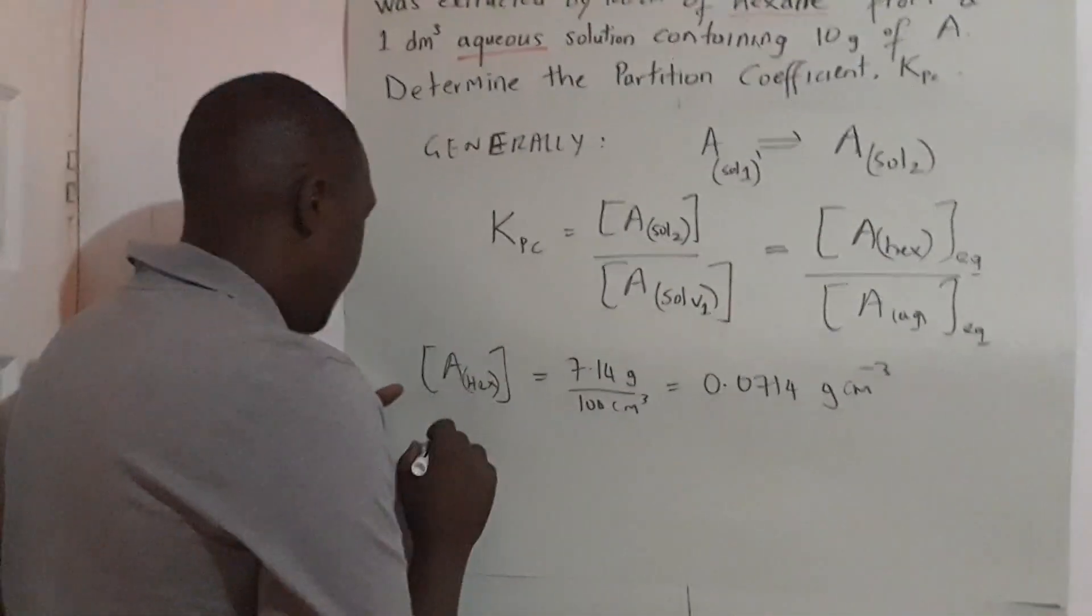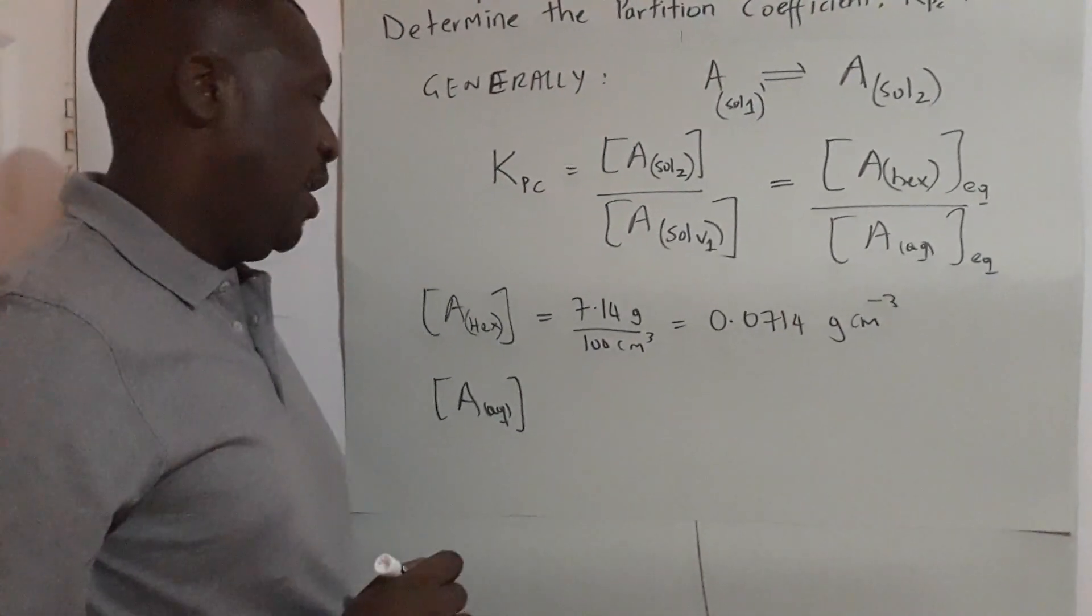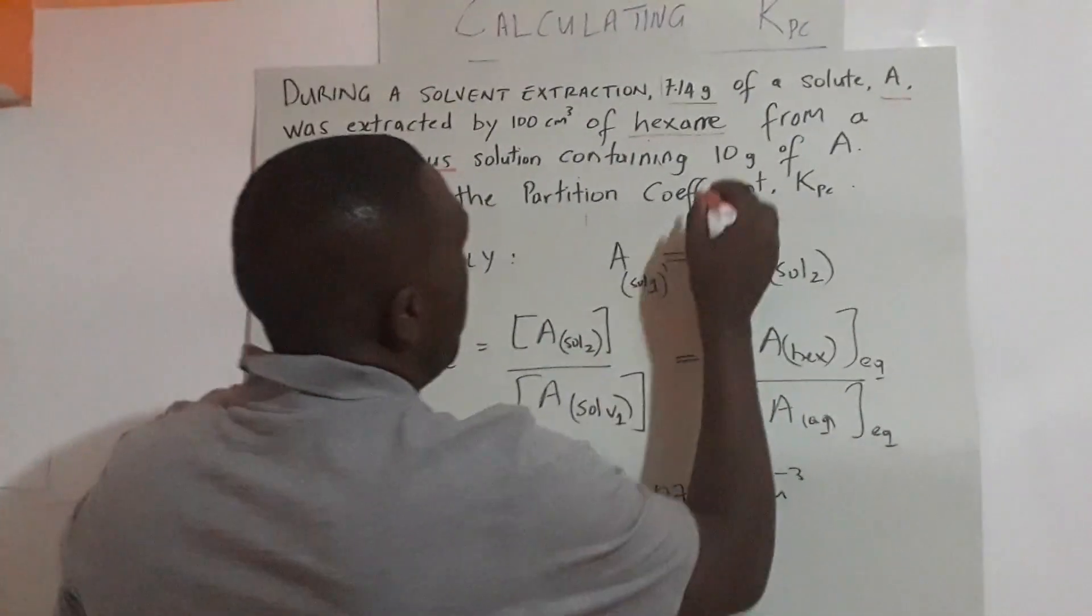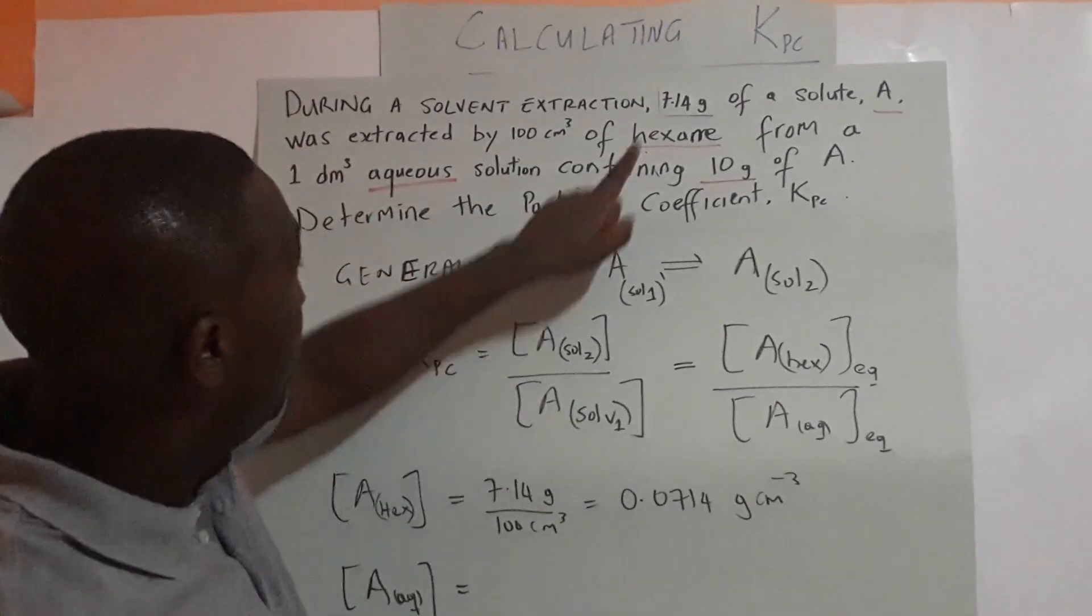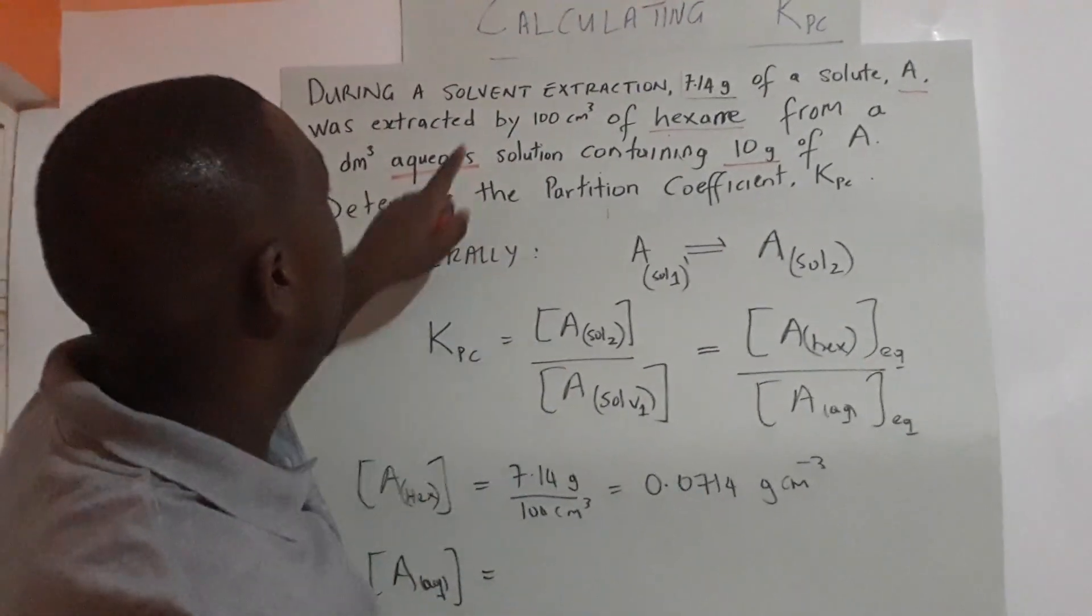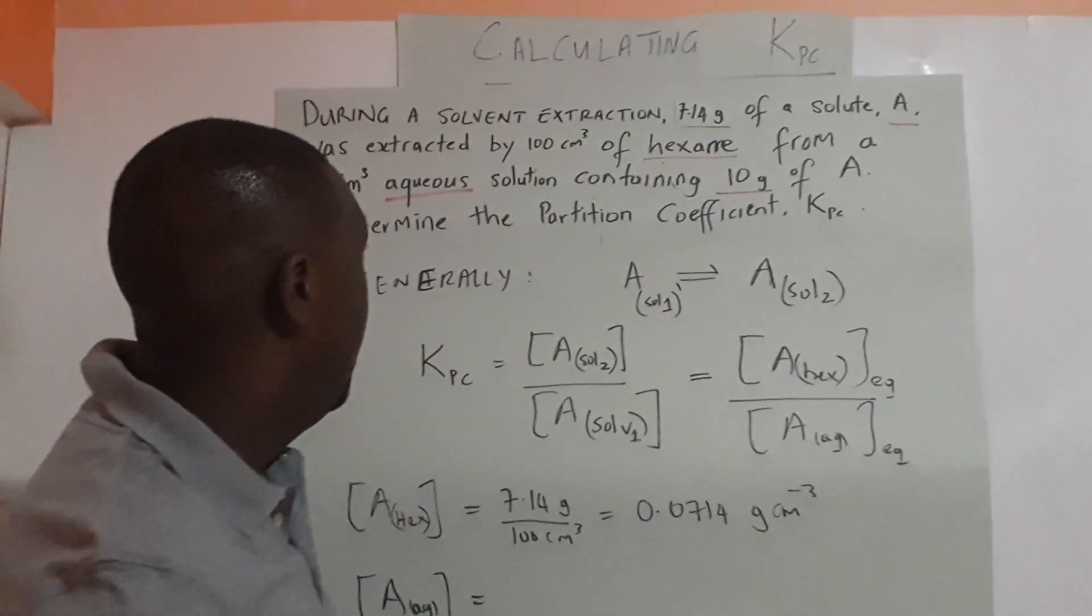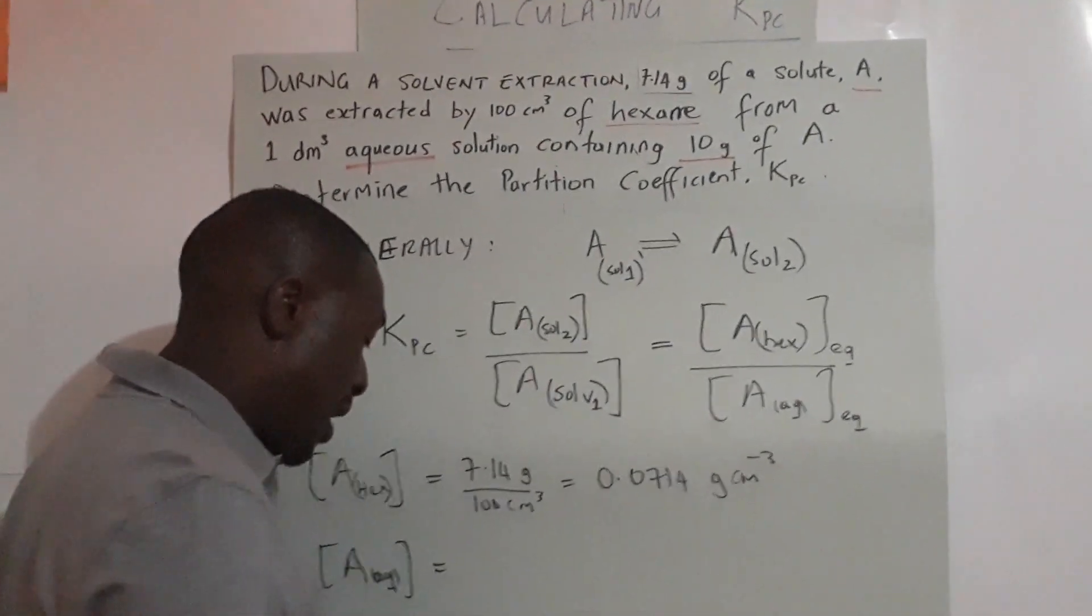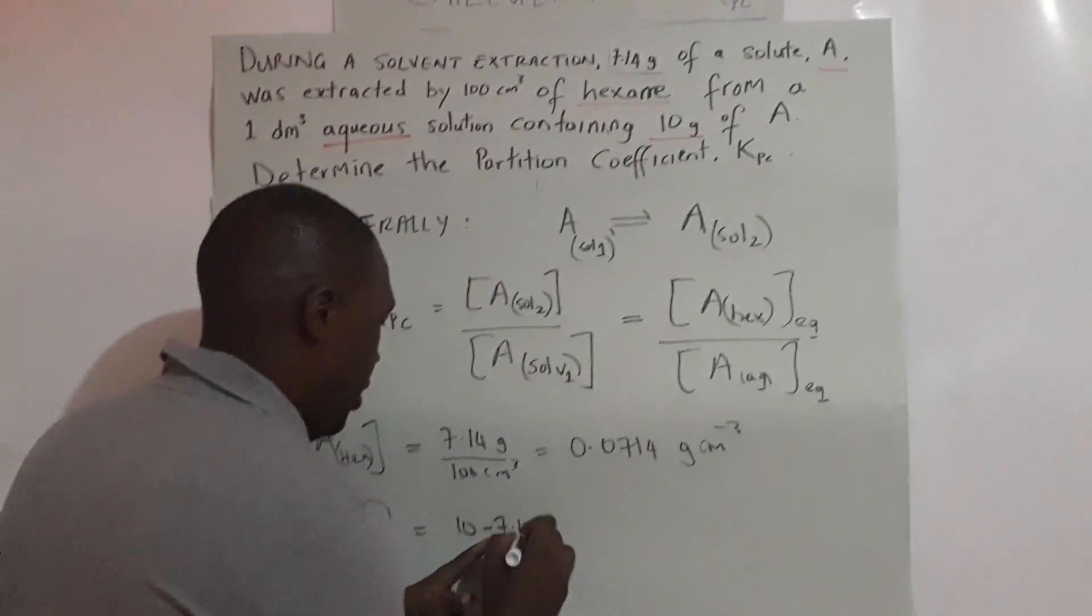Now we have to determine A in aqueous. We have to be careful here. We originally had 10 grams of A in aqueous solution, but remember that after shaking and allowing it to stand at equilibrium, we extracted out 7.14 grams of compound A. So at equilibrium, the mass that would be there would be 10 minus 7.14 grams.